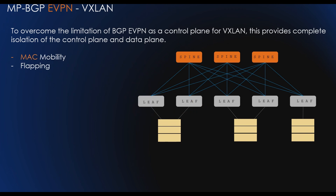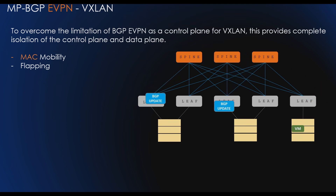Next is MAC mobility. The EVPN feature is designed for fast convergence. A big issue within the data center is MAC mobility and flapping — when a VM moves, the MAC address needs to be relearned and the old entry deleted. With BGP route type 2, the sequence number in the route type is used to delete the old entries.